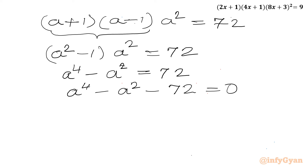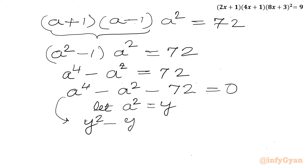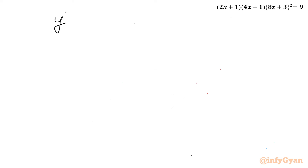This is a quadratic equation in a². We use the substitution a² = Y, so the equation becomes Y² − Y − 72 = 0. Note that Y must be greater than or equal to 0 for real solutions. Let us solve this quadratic.